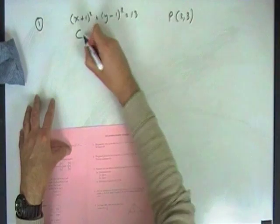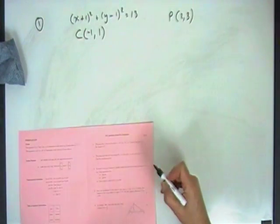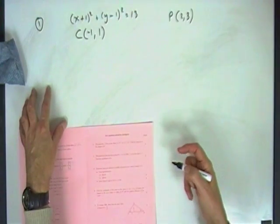First thing as always, what's the center of that circle in that form? It's just going to be the opposite of that and the opposite of that. Circle, center C(1,1), radius root 13, tangent to the point P.